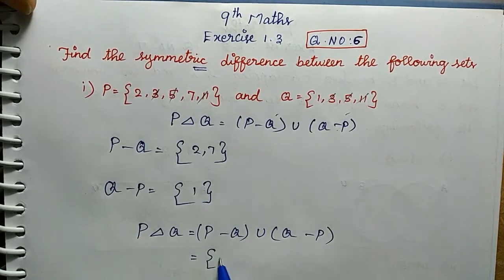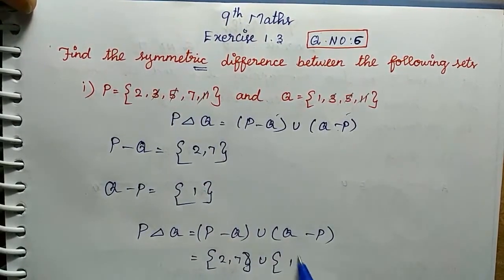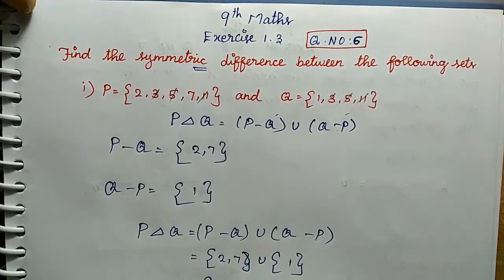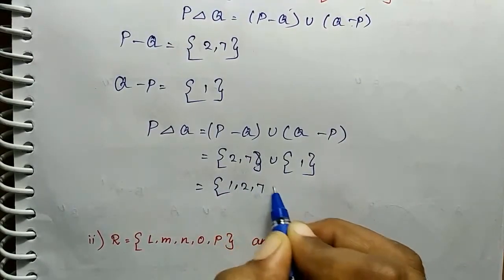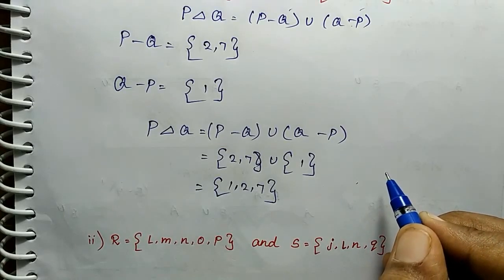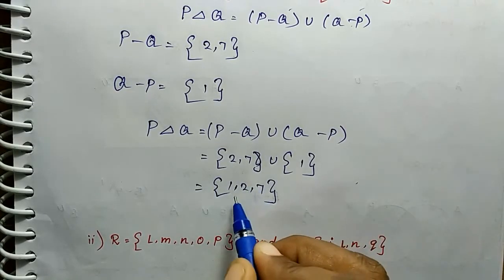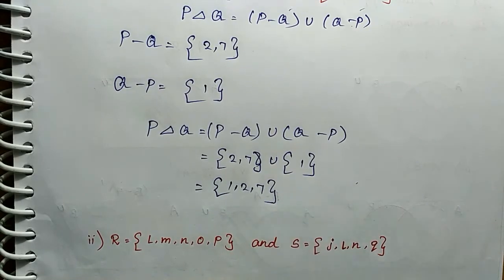We will set 2, 7 union 1. So in the two values, we will set 1, 2, 7. So P set and Q set Symmetrical difference. In the two values: 1, 2, 7. Okay, same thing. Second sum.